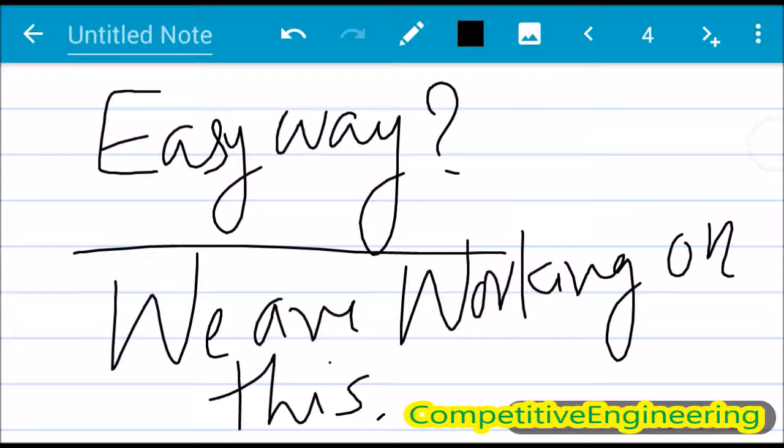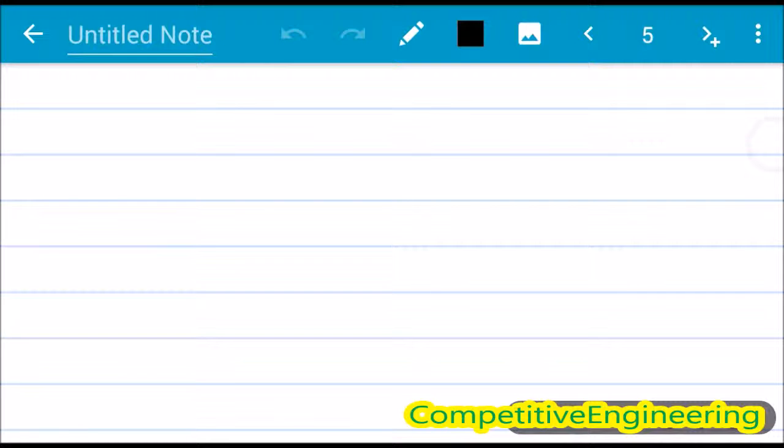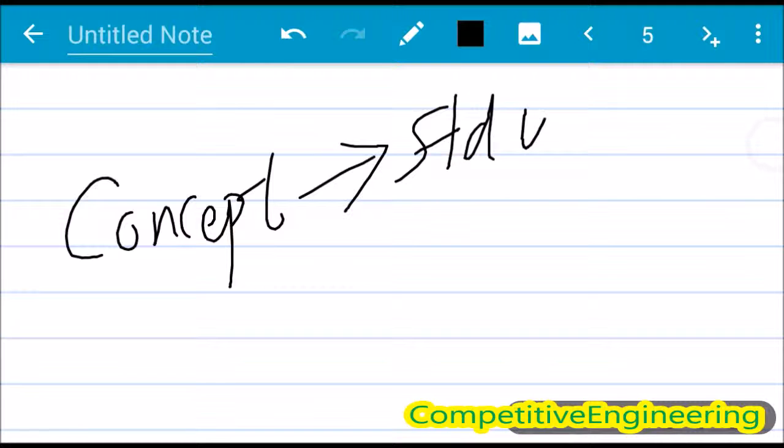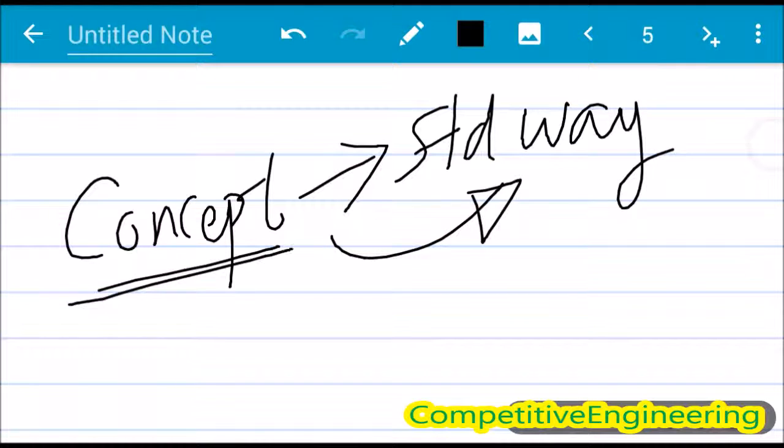Let us see how we are going to do this. We will briefly discuss the concept first, and then we will solve the problem in standard way. Why the standard way? To understand the concept thoroughly, we need to solve the problem in the standard way. Once the standard way is clear, we will introduce the easier way.